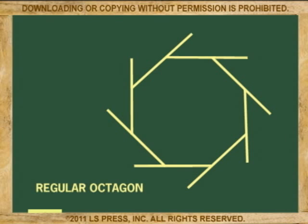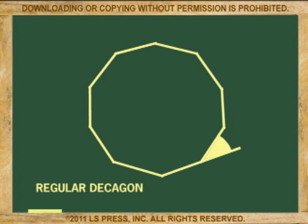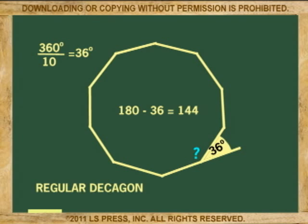So what we learn from this is that to find the measure of one exterior angle of a regular convex polygon, just divide 360 by the number of sides. For example, the measure of one exterior angle of a decagon is 360 divided by 10, or 36 degrees. And if you want to know the interior angle of the decagon, just subtract 36 from 180 — remember, exterior and interior angles are linear pairs — giving an interior angle of 144 degrees.